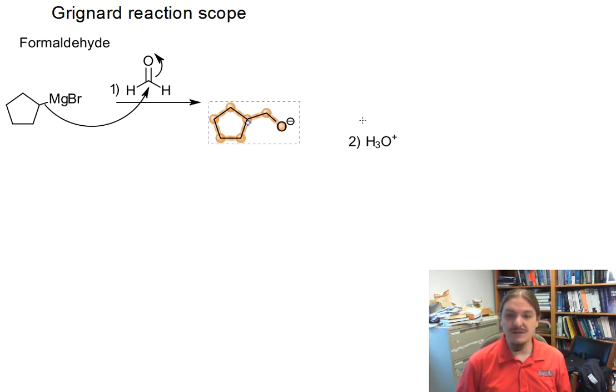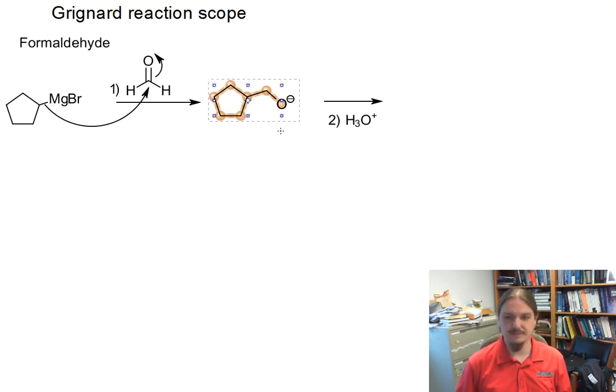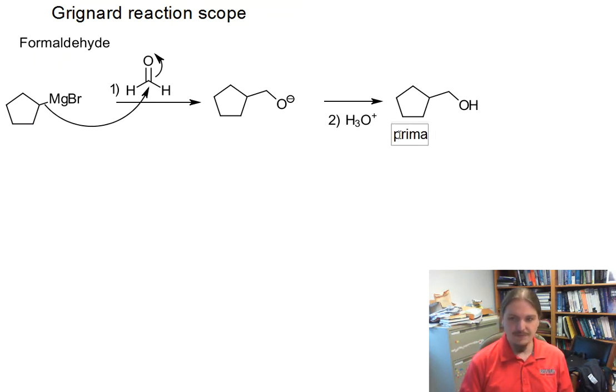And then when we do the proton transfer step, we add water for the aqueous workup. Here's my 2) H3O+. That gives us the alcohol. So this is a great way to make a primary alcohol. We extend a chain one carbon. And really honestly, the only limitations on what kinds of primary alcohols can be made this way are in the variations, and there are numerous, of what you can make a Grignard reagent out of.